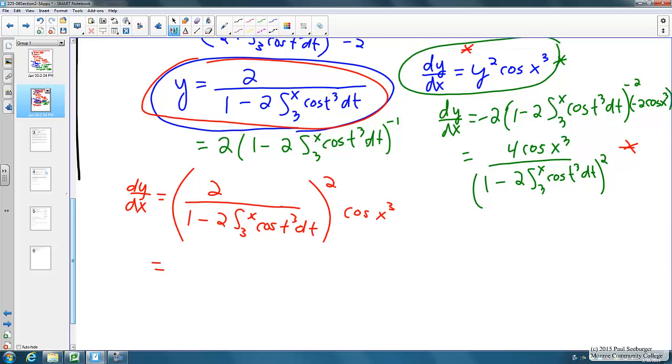When you square the top we get 4 times the cosine of x cubed, which is up there on top already. When you square the bottom we just sort of leave it squared, and this is looking good. We've got 1 minus 2 times the integral from 3 to x cosine of t cubed dt. That expression down there is going to be squared as well in the denominator. And that ends up matching exactly with the derivative we just calculated directly from our final solution curve.